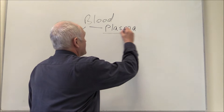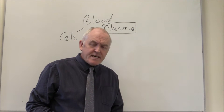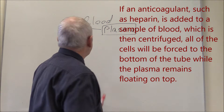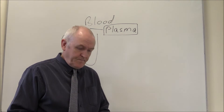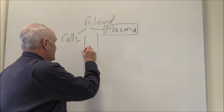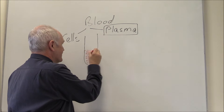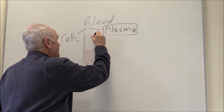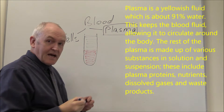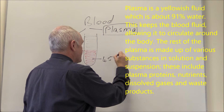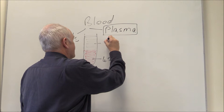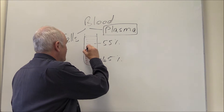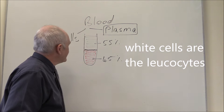Today we want to think about the plasma. If you take a sample of anticoagulated blood and centrifuge it, you'll end up with something like this: the red cells will settle out on the bottom, and the plasma will be a straw-colored liquid on top. There might be a very small strip of white cells in between the two layers.